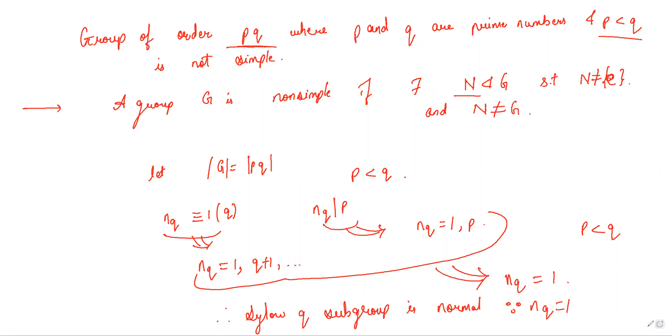Let's call that subgroup H, the Sylow q subgroup. Then the order of H is equal to q, which implies H is a proper non-trivial subgroup of G.